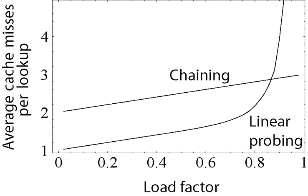Open addressing has a lower cache-miss ratio than separate chaining when the table is mostly empty. However, as the table becomes filled with more elements, open addressing's performance degrades exponentially. Additionally, separate chaining uses less memory in most cases, unless the entries are very small.